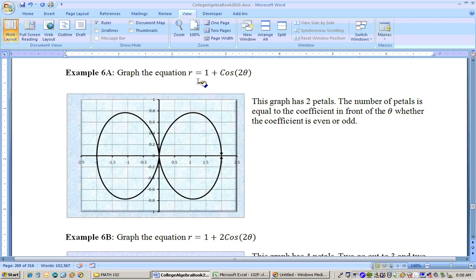If we graphed R equals 1 plus cosine of 2 theta, you'd find out that we actually end up with only two petals on that. Now, you might say, what's going on here? Why isn't there four petals? Well, we had four petals if we just graphed R equals cosine of 2 theta, but this is 1 plus cosine of 2 theta, and we just have two petals on that.